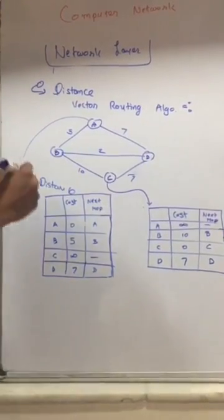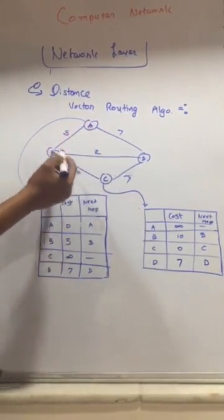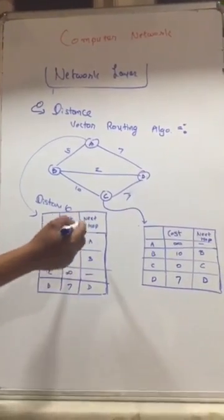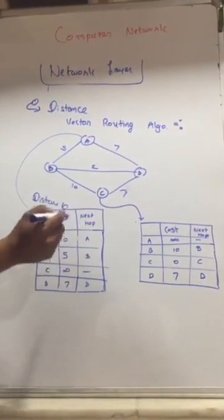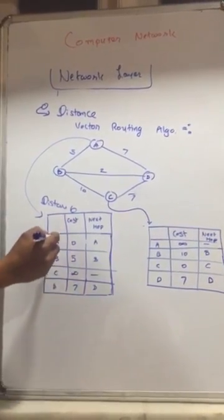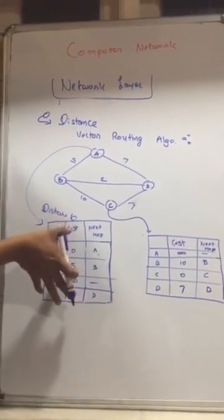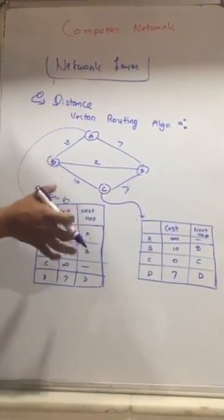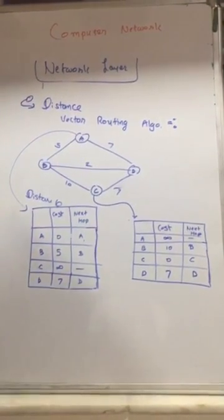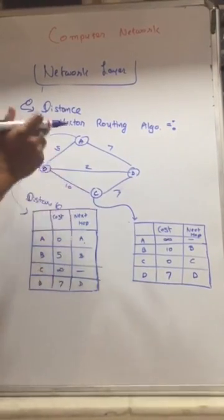You might have noticed I have changed the node labels from A, B, C, D to 1, 2, 3, 4. Also, there is a third column — next hop. Right now the next hop is the destination node itself, which is why both columns appear the same. But when the routing table is shared between nodes, this value might change. Now let's take the scenario when C sends its routing table to A.